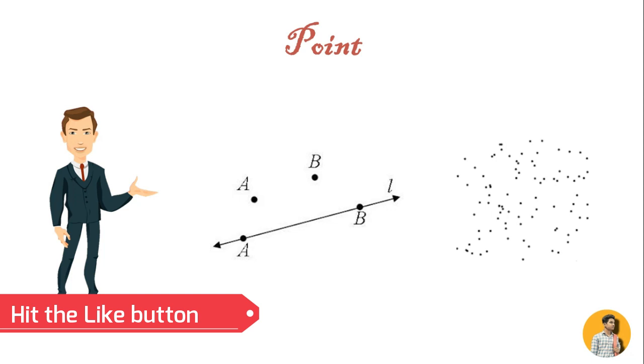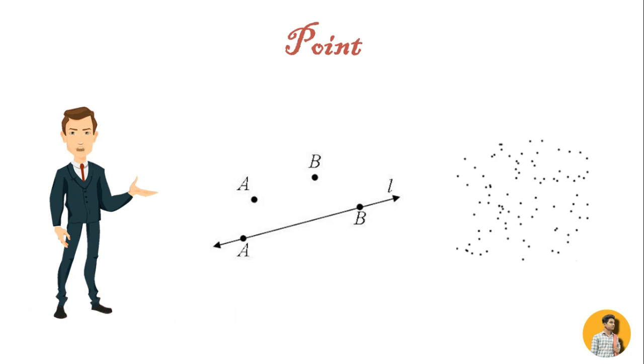A point can serve to mark the two ends of a line, the intersection of two lines, the meeting of lines at the corner of a plane or volume, and the center of the field or environment.